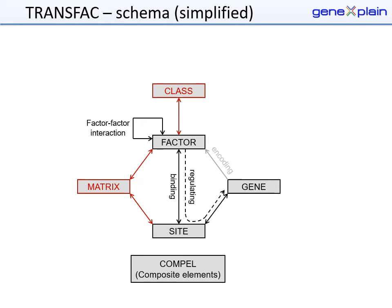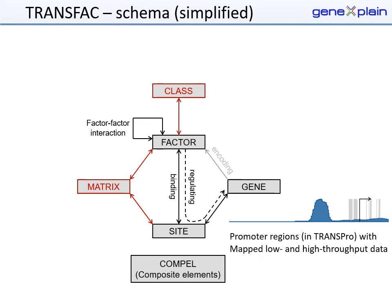Synergistic and antagonistic interactions between transcription factors binding to closely situated sites, so-called composite regulatory elements, are included in the COMPEL flat file of TRANSFAC. ChIP-seq and other high-throughput data are also included and are mapped to promoter and enhancer regions.